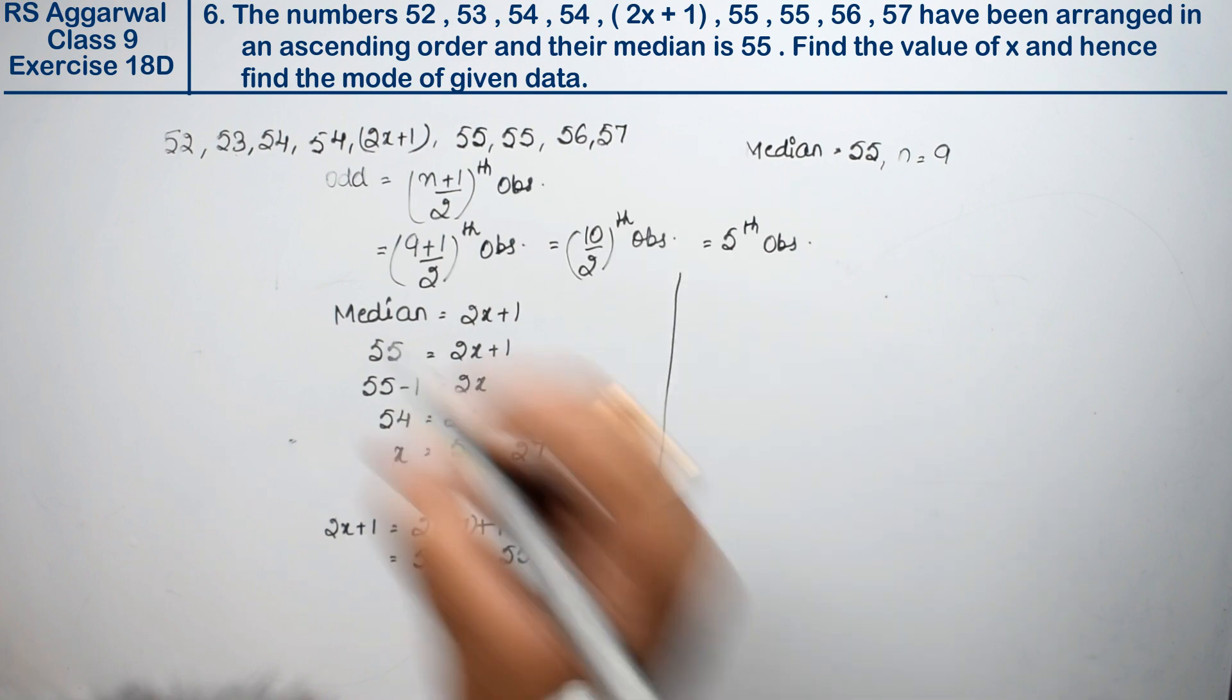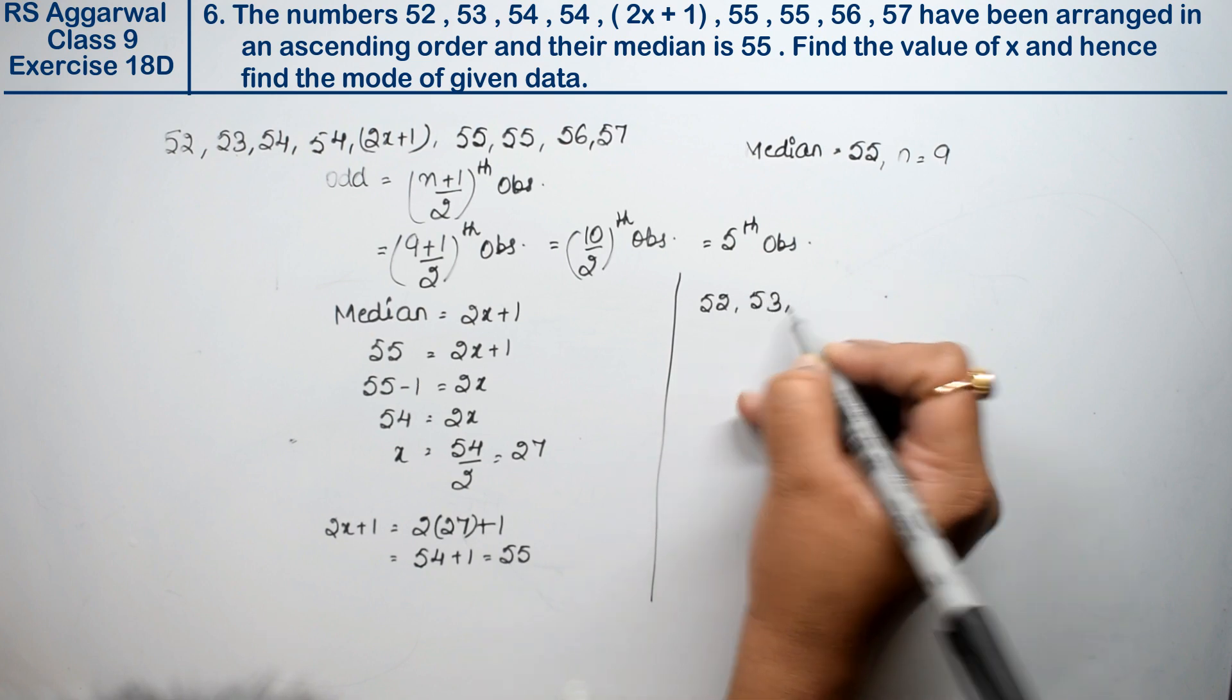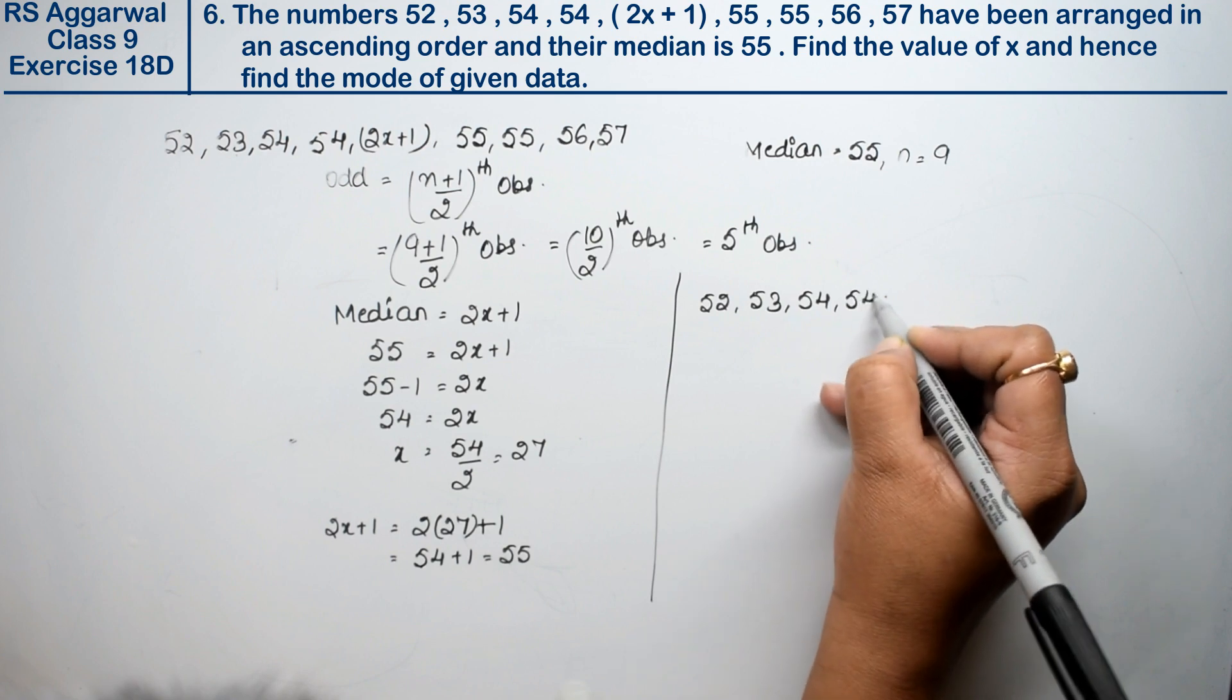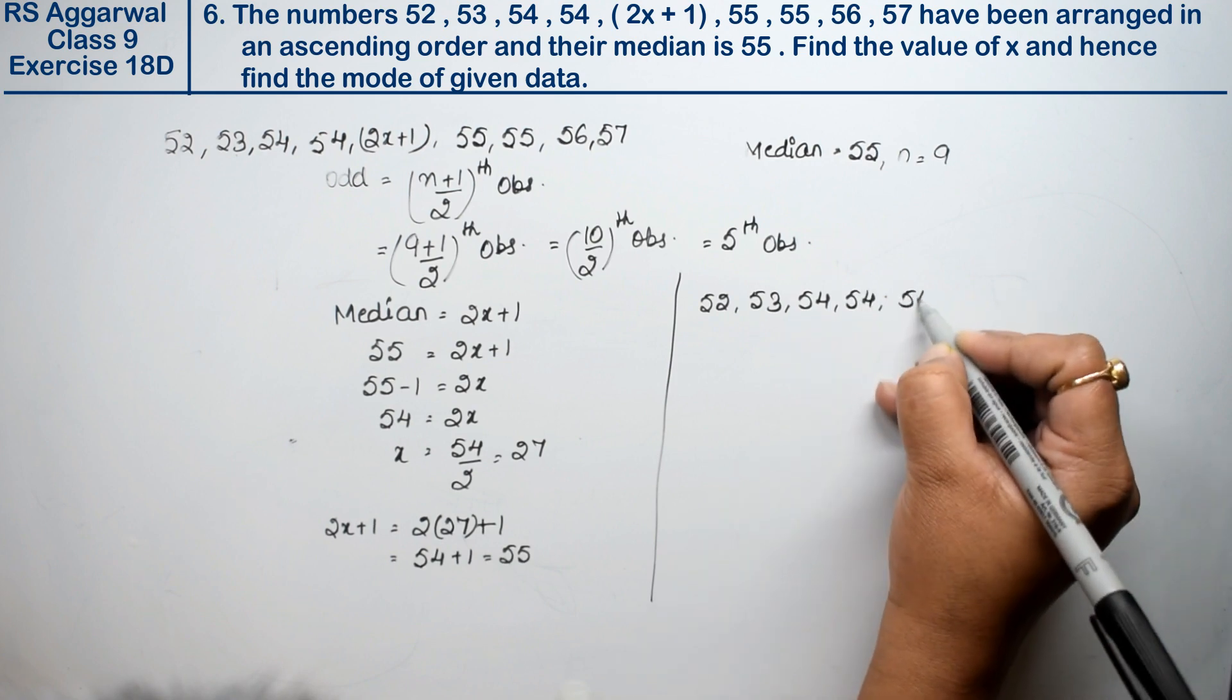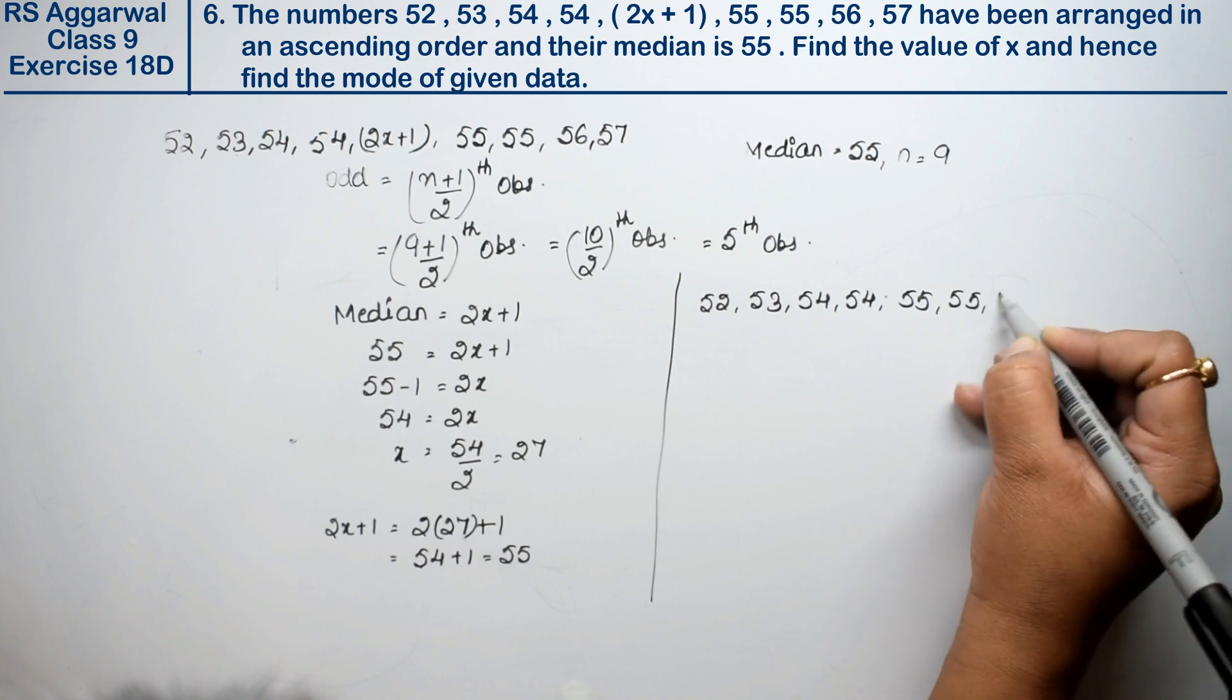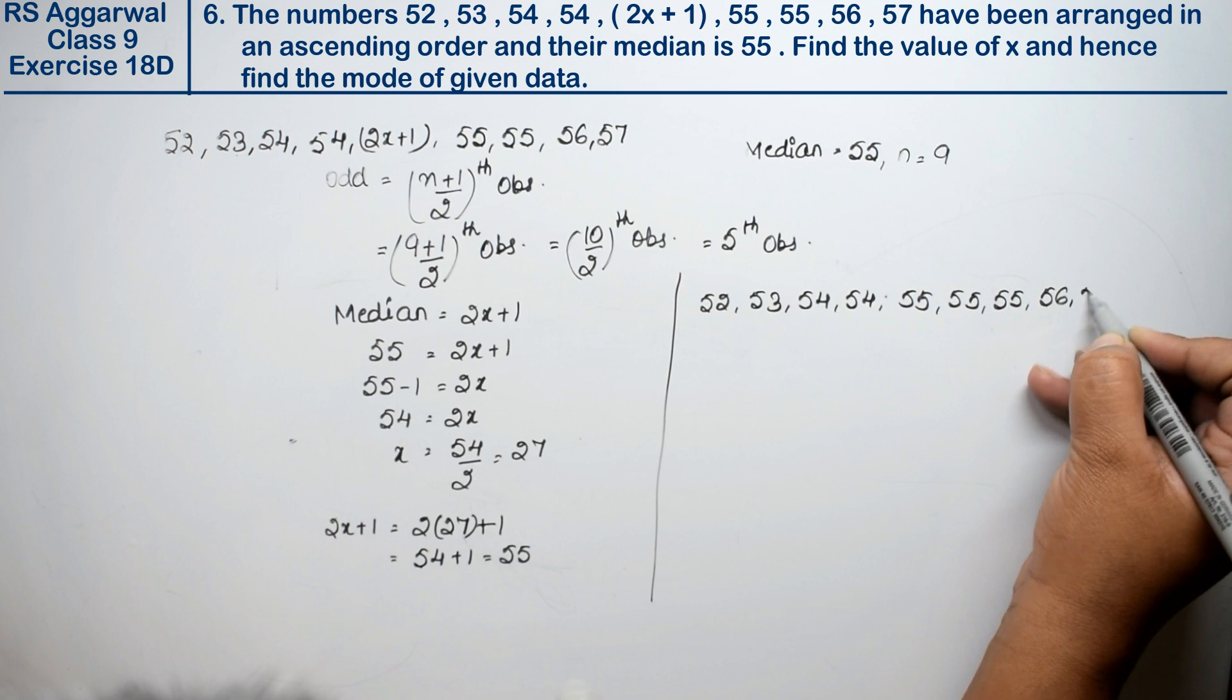Now what is the series? First is 52, 53, 54, 54, then 2x plus 1 becomes 55, then 55, again 55, then 56 and 57. This is already in ascending order.